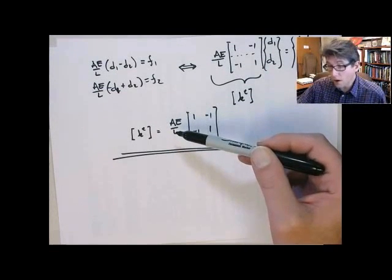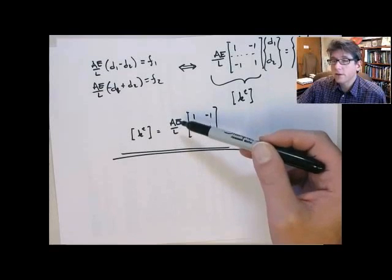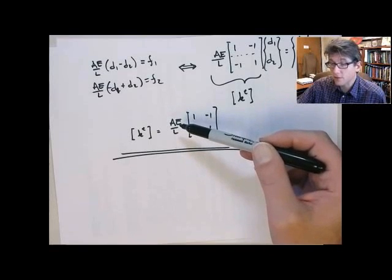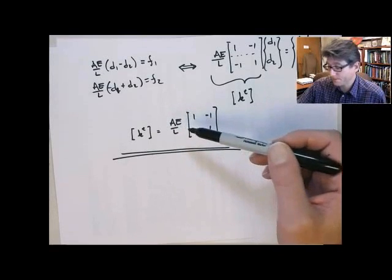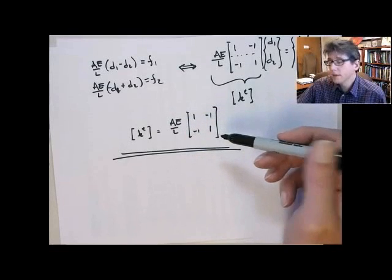You make the bar longer, the stiffness goes down. You increase the material stiffness through Young's modulus, the stiffness goes up.